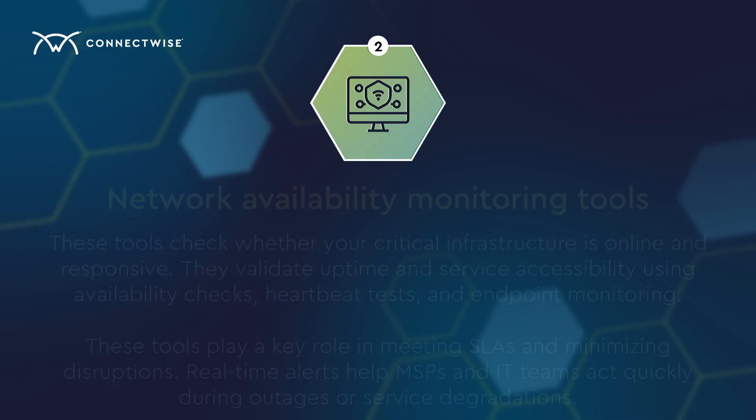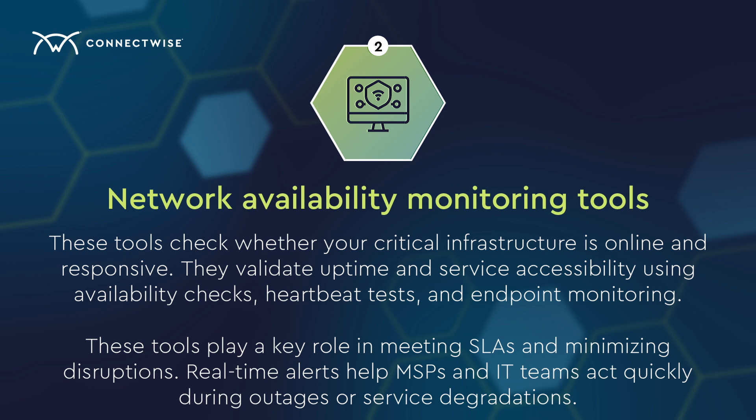Number two: network availability monitoring tools. These tools check whether your critical infrastructure is online and responsive. They validate uptime and service accessibility using availability checks, heartbeat tests, and endpoint monitoring. These tools play a key role in meeting SLAs and minimizing disruptions. Real-time alerts help MSPs and IT teams act quickly during outages or service degradations.